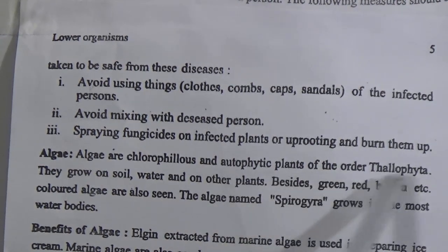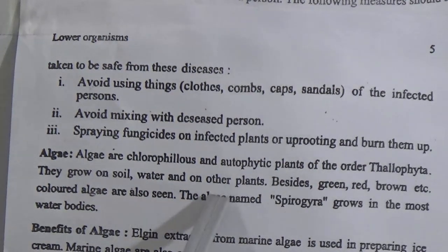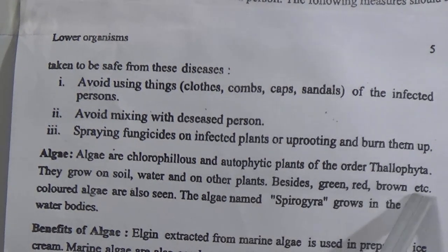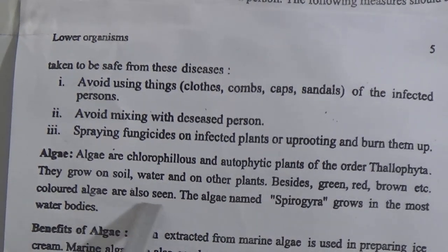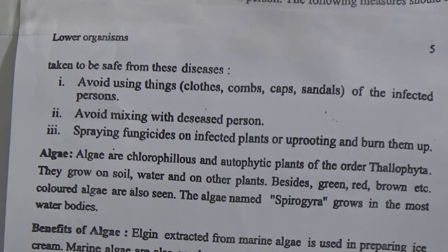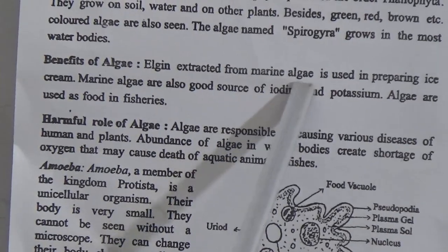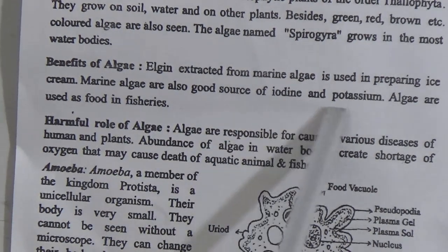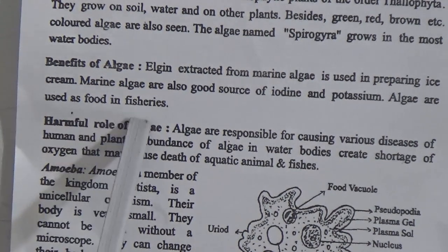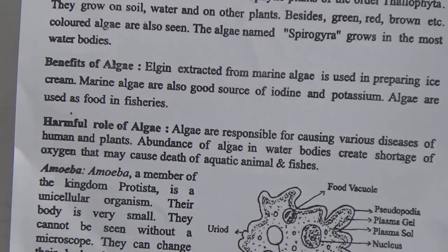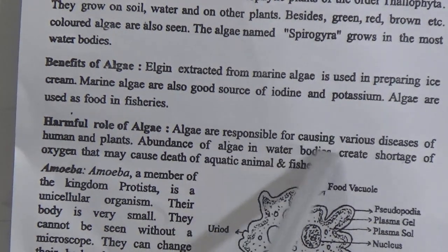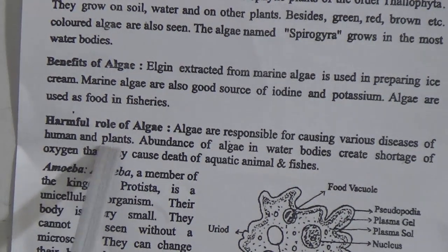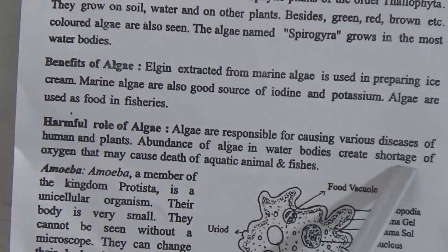Algae are chlorophyllous and autotrophic plants of the order Thallophyta. They grow on soil, water, and on other plants. Besides green, red and brown colored algae are also seen. The algae named Spirogyra grows in moist water bodies. Benefits of algae: agar extracted from marine algae is used in preparing ice cream. Marine algae are also a good source of iodine and potassium. Algae are used as food and in fisheries.